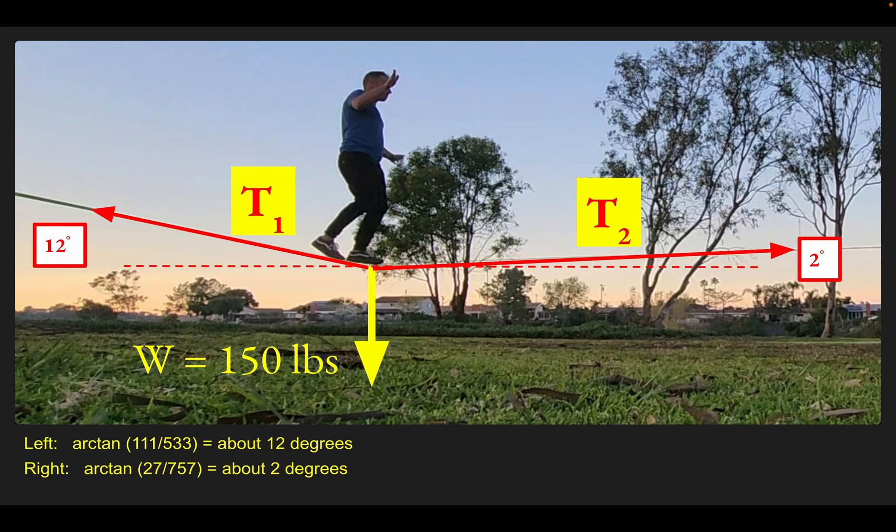If you don't want to pause the video, I'll show you how to do it. Let's look at the horizontal direction. F = ma horizontally—two horizontal forces. You have the horizontal part of T2, which would be T2 cosine 2, and the horizontal part of T1, which would be T1 cosine 12. So T2 cos 2 minus T1 cos 12 would be zero. Those forces balance.